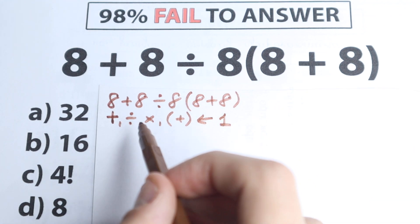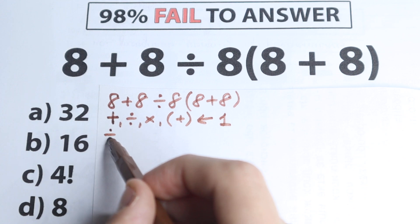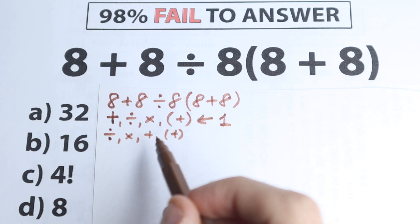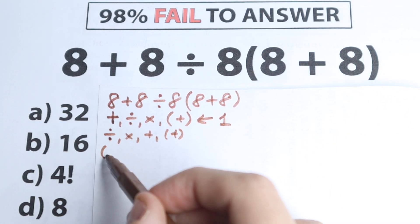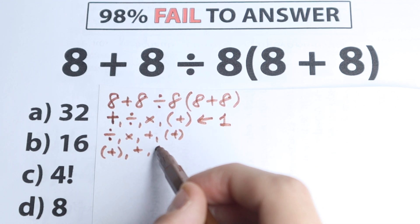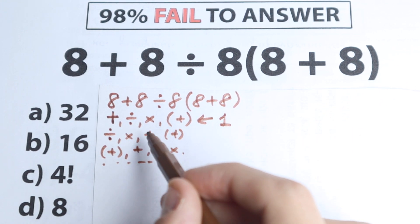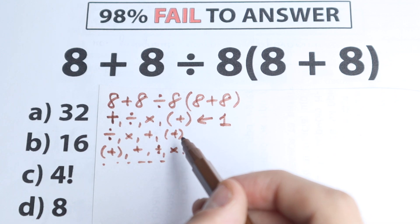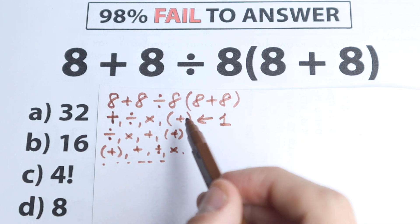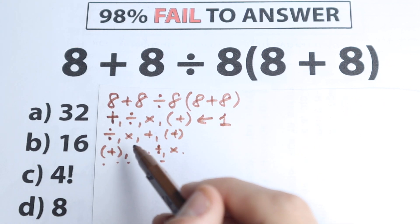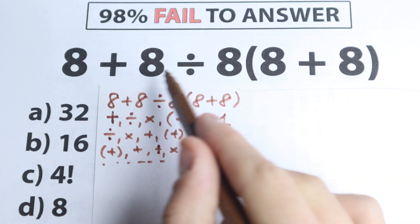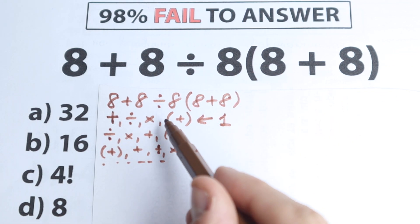Another part of students thinks to start from division, then multiplication, then addition, then parentheses. Yet another part starts from parentheses, then goes left to right. In math we need to know what is the one and only correct answer — we can't have two different answers depending on which order of operation we choose. We need to know the correct order to solve this problem.